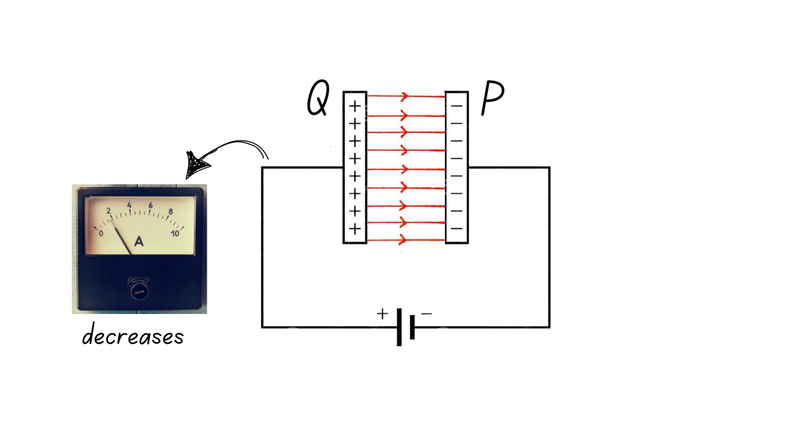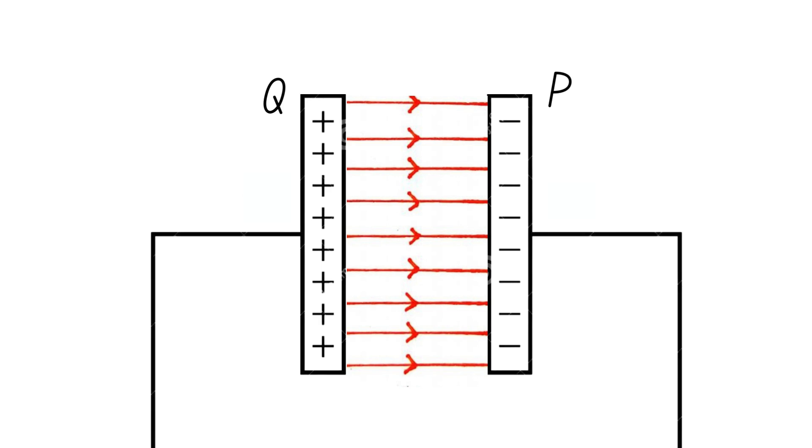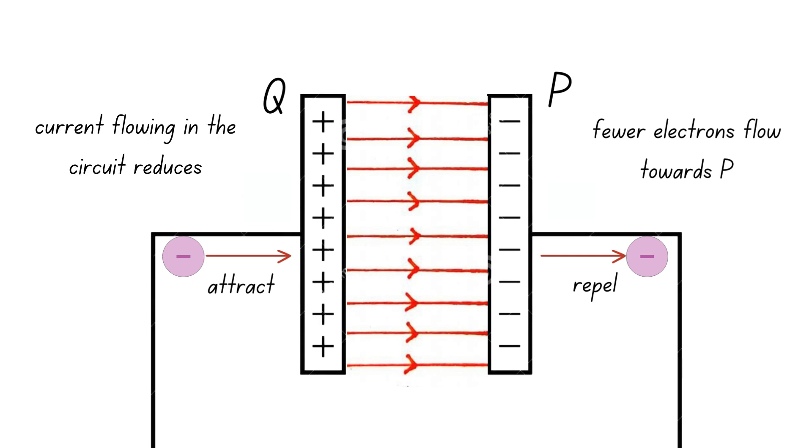You can think of it this way. As more electrons accumulate on P, this negative charge starts to repel the electrons being pushed towards it by the power source, thus fewer electrons flow towards P, meaning there is a decrease in current. Similarly, as positive charge accumulates on Q, it attracts electrons and inhibits them from traveling to the positive battery terminal, thus reducing current as well.